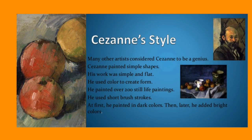Cezanne had a very definite style and many other artists considered him to be a genius. He painted simple shapes, his work was simple and flat and he used colour to create form. He painted over 200 still life paintings. He used lots of short brush strokes and at first he painted in dark colours, then later on in his career he added bright colours.